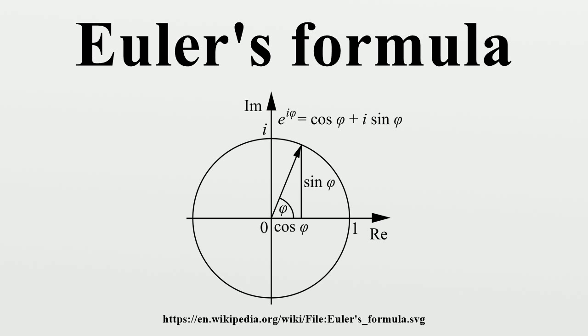This complex exponential function is sometimes denoted cis. The formula is still valid if x is a complex number, and so some authors refer to the more general complex version as Euler's formula.